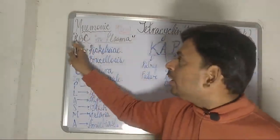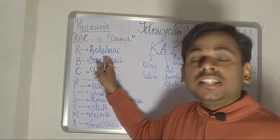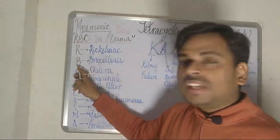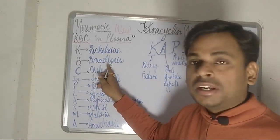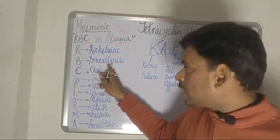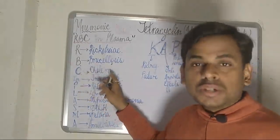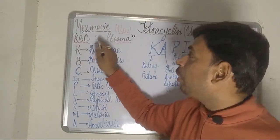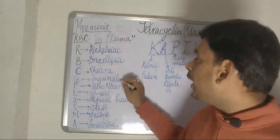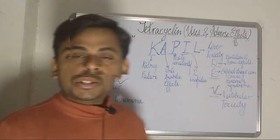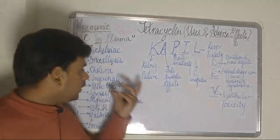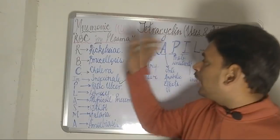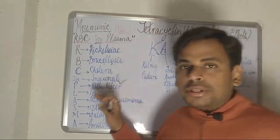The R refers to rickettsial infections. The B of RBC is referring to brucellosis. The C refers to cholera. The IN of 'in' is referring to inguinal conditions — inguinal infections or inguinal disorders where tetracyclines can be used.